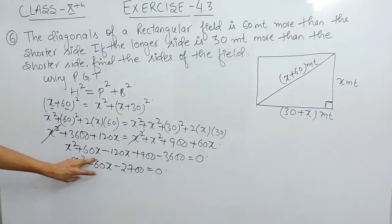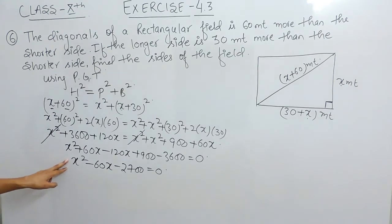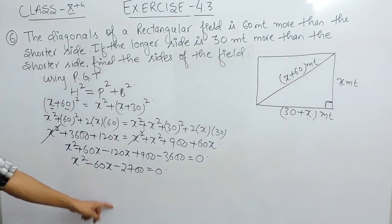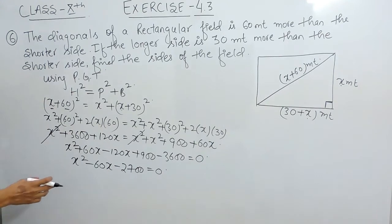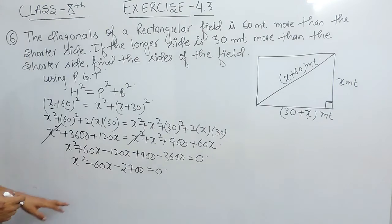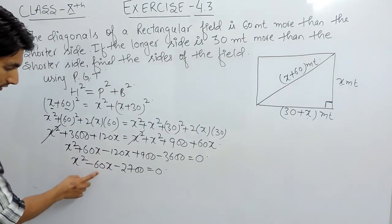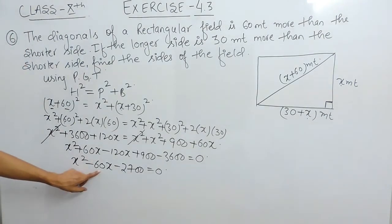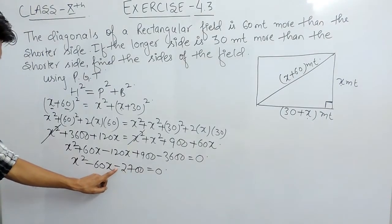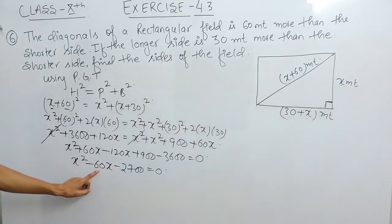Now we have our standard quadratic equation. To find the value of x, or the sides of the rectangular field, we need to solve or factorize this. We have three methods: split the middle term, complete the square, or use the formula. The best approach here is to split the middle term of 60x into two parts such that their product is 2700 and their difference is 60.